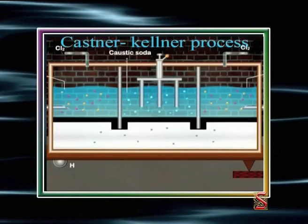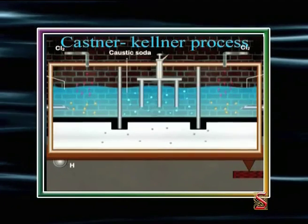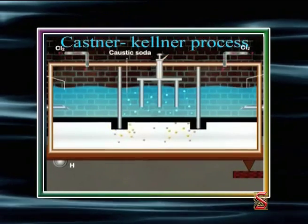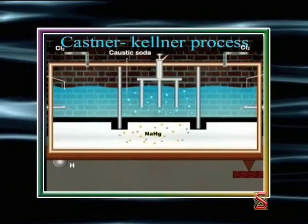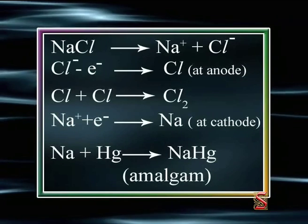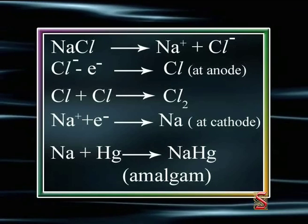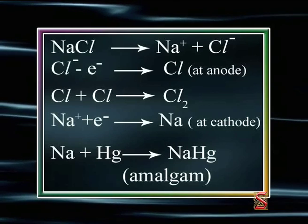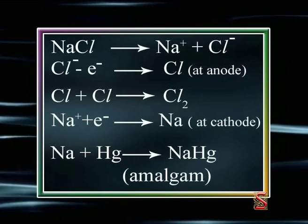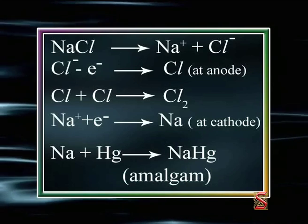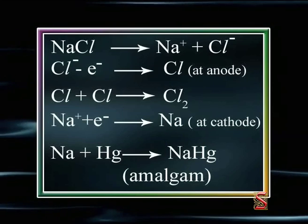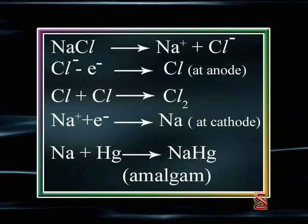On passing electric current, chlorine gas is liberated at the graphite anode in the outer compartments, and sodium ions are discharged at the mercury cathode. Sodium chloride ionizes to give Na⁺ and Cl⁻. At the anode, a chloride ion loses an electron to form a chlorine atom: Cl⁻ − e⁻ → Cl. Two chlorine atoms combine to form a chlorine molecule that escapes as gas: Cl + Cl → Cl₂.